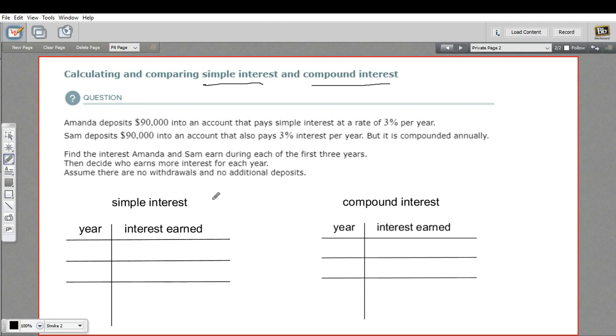So with simple interest, it's pretty easy. You take the principal, and the principal is just the amount that you originally put in. So in this case, it's $90,000, and you multiply it by the rate. Now the rate is 3%. Of course, to multiply a percent, we need to convert it to a decimal, so we move the decimal point two places to the left. So our rate is .03. So to figure out our interest, it's 90,000 times .03, and that is 2,700.